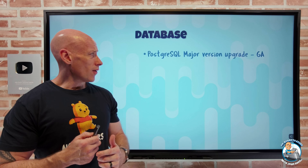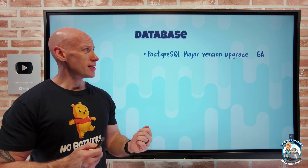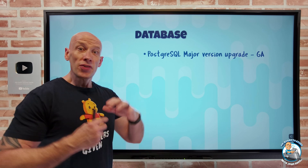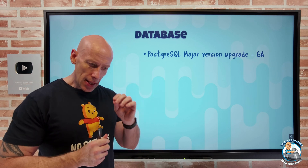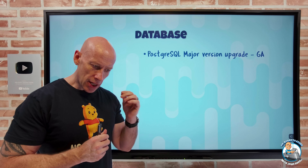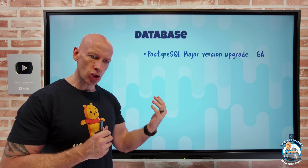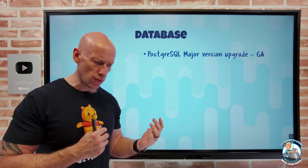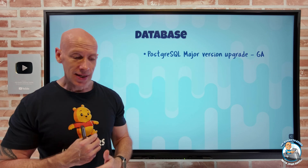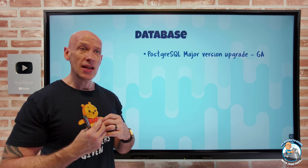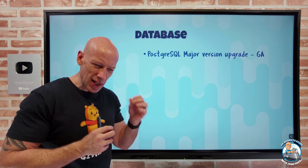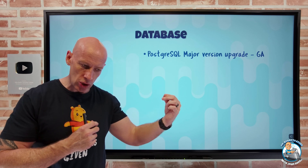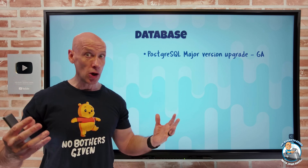On the database side, PostgreSQL major version upgrade has gone GA for Postgres Flexible Server. The whole point is I can now move to a higher version without a complicated migration process — no need to stand up a new instance and move data over. It runs a pre-check, and assuming that passes, it takes a native backup and uses pg_upgrade to perform the in-place upgrade to a new version. It is an offline operation.